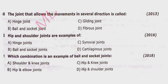Question 30: The joints that allow movement in several directions are called hinge joints, ball and socket joints, gliding joints, or fibrous joints. Correct option is beta — ball and socket joints. Question 31: Hip and shoulder joints are examples of hinge joints, ball and socket joints, synovial joints, or cartilaginous joints. Correct option is beta — ball and socket joints.